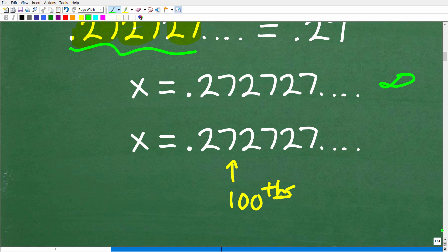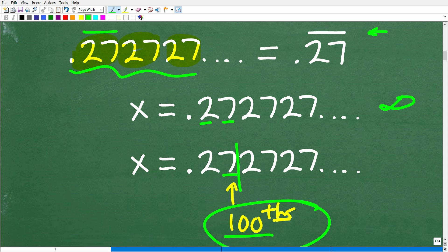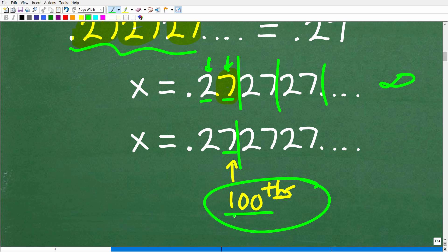Now what we're going to do is the following. We're going to observe this decimal and see at what place value does this decimal repeat. You can see the 2 is in a tenths place, the 7 is in the hundredths place. So it's repeating at the hundredths place. I want you to keep that in mind because we're going to be using this value 100 here in a second.